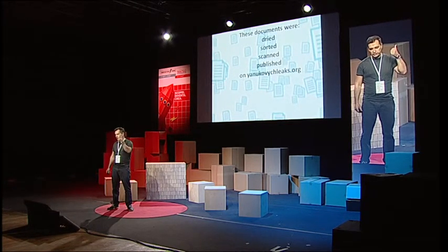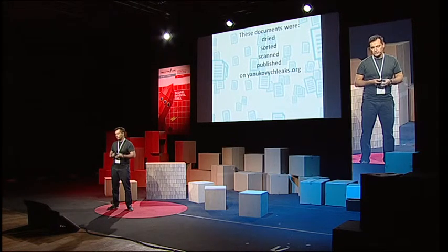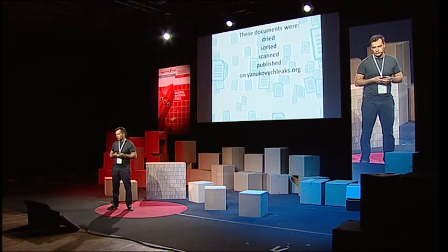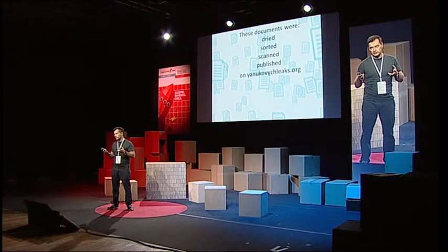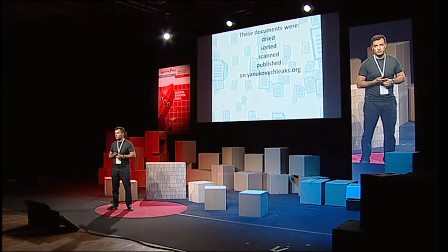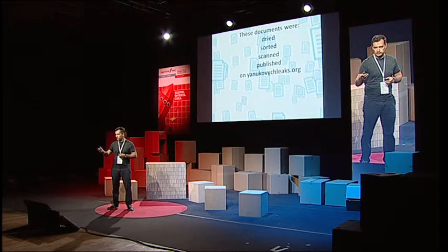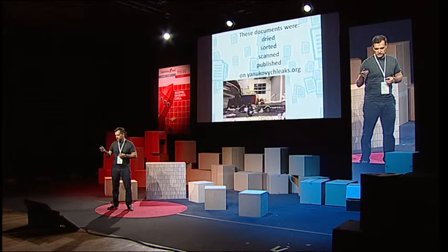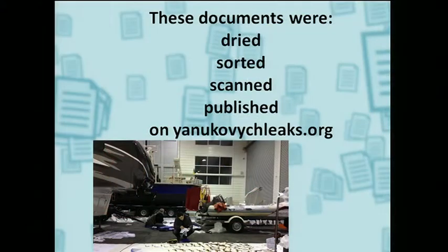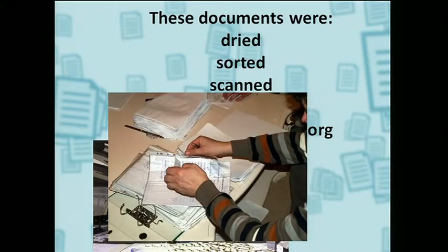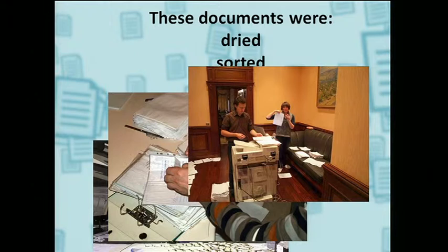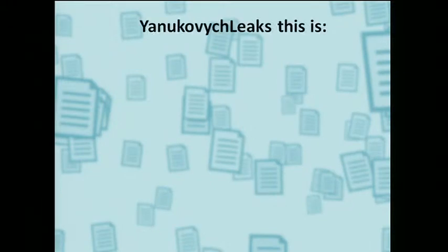We first dried, sorted, and scanned these documents, then published them on yanukovich.org. Nearly 100 volunteers helped us do it. You can see some photos from Yanukovych's big garage for his swimming boats, where we sorted and dried the documents. Then we started scanning with big industrial scanner machines.